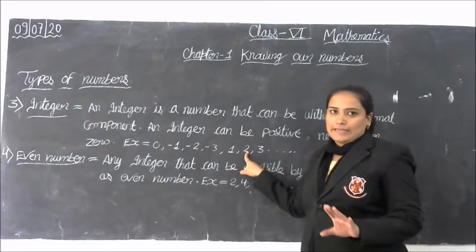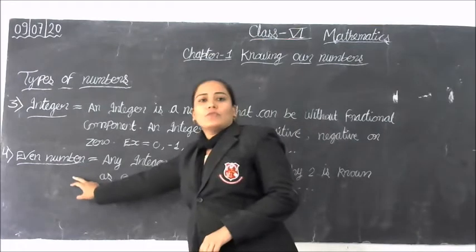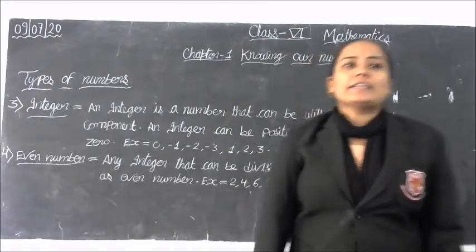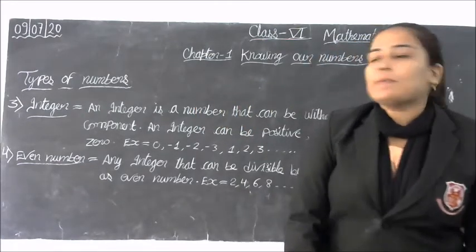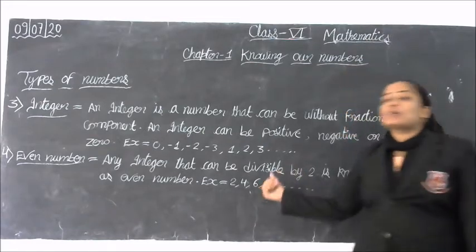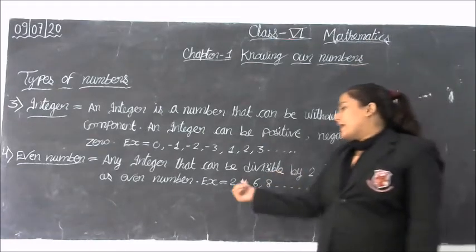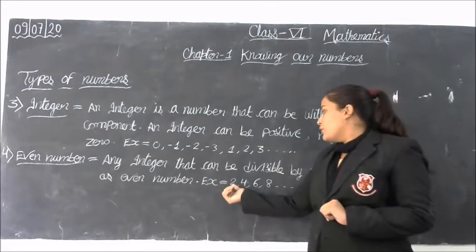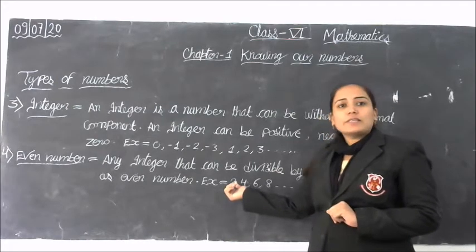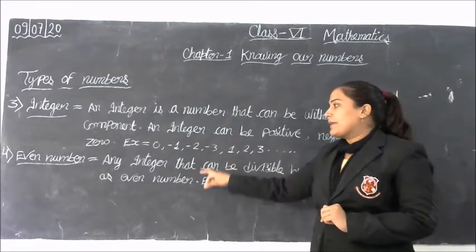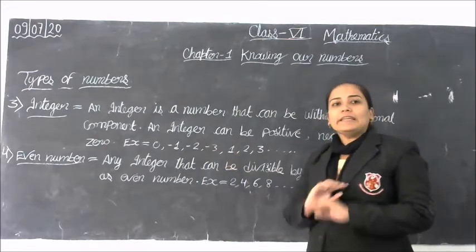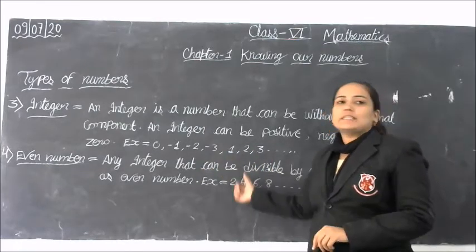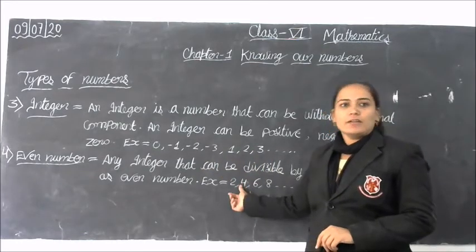Next, the fourth definition: even numbers. Any integer that can be divisible by 2 is known as an even number. For example, 2 — who is divisible by 2? 4 is divisible by 2. So any integer that is divisible by 2 is an even number.